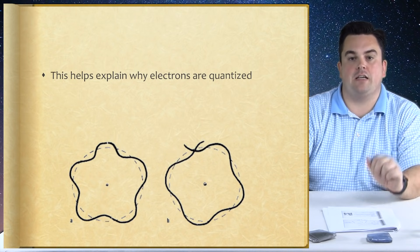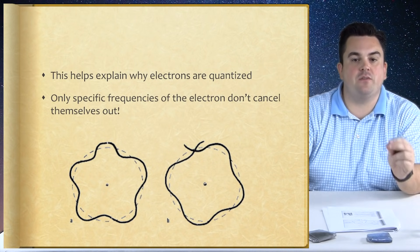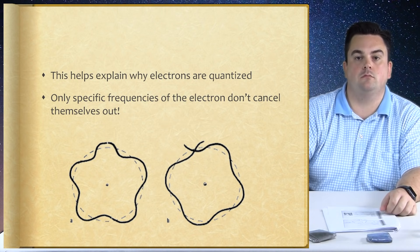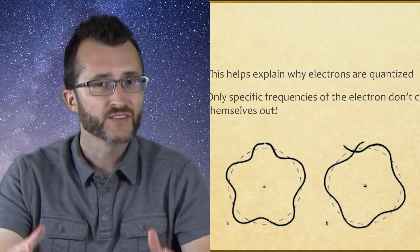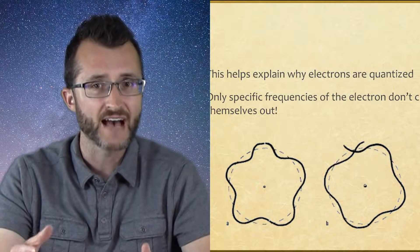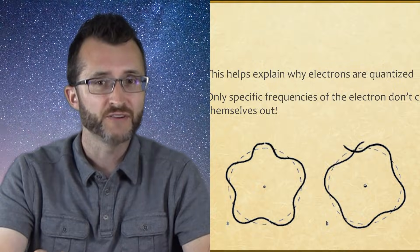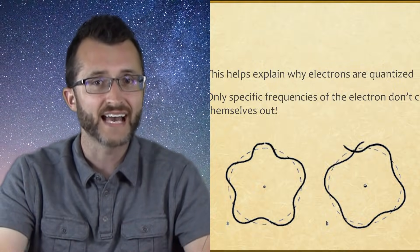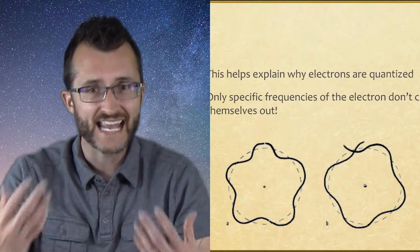This helps explain why electrons are quantized. Only specific frequencies of the electron don't cancel themselves out. Looking at picture A, this represents a wavelength where the electron traveling around the nucleus will not cross itself — this is an energy level the electron is allowed to exist in. In picture B, the wavelength is a little longer; the waveform crosses paths, meaning the electron is not allowed to exist at that energy. There are only specific wavelengths and frequencies the electron is allowed to have for each energy level. If varied slightly, the electron cancels itself out and can't exist at those energies.